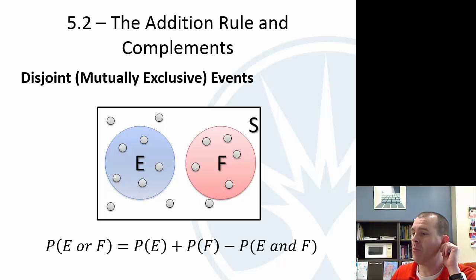If you look at that same rule, the probability of E or F, it's the probability of E plus the probability of F, you don't need the probability of E and F. You don't need the probability of E and F because it's zero. So there's kind of a special addition rule when they're disjoint.